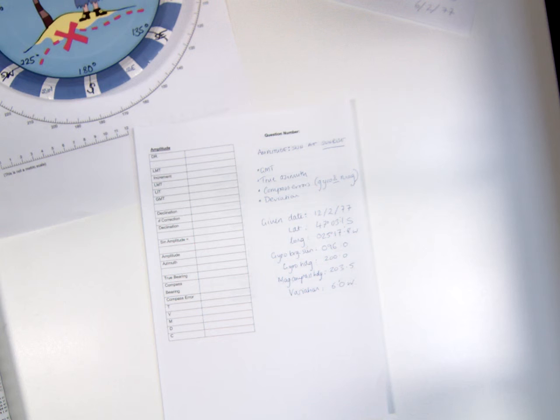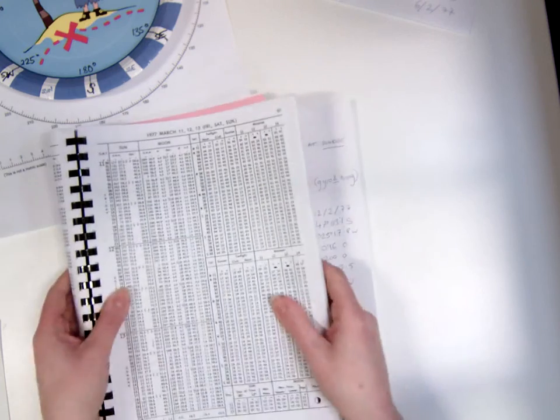To begin with, we want to know the GMT of the altitude of the Sun at sunrise. For this we need the Nautical Almanac. So the first thing we're going to do is turn to the page for the 12th of March.